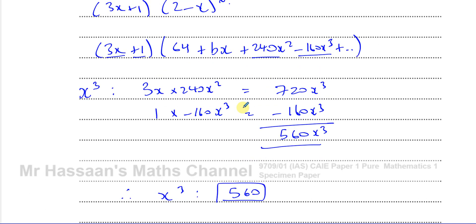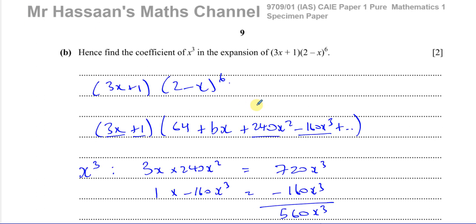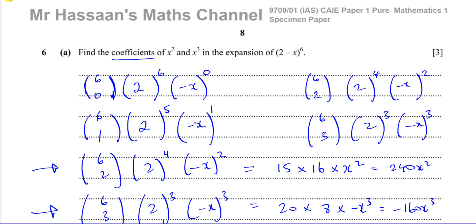We don't write the answer with the x cubed — just state the coefficient as 560. That's part B, and that wraps up question number 6. Other questions from this paper can be found in the playlist appearing here, and other Cambridge Pure Mathematics 1 binomial expansion questions are in the playlist over here. You can subscribe by clicking the link, and thank you for watching — see you soon.